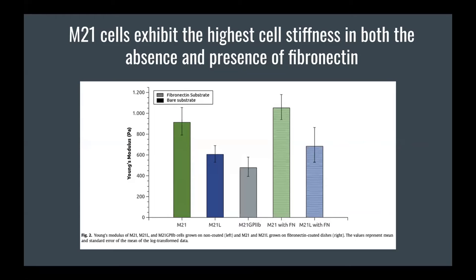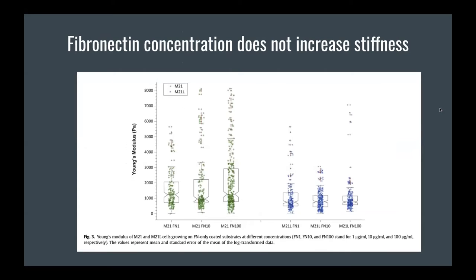An analogy: imagine playing Red Rover alone in suspension conditions — it would be easy to knock you over. But when the cell is linked to a fibronectin-coated dish, it's connected to something else, like having a partner to link arms with, which overall increases the strain and strength of the cell.